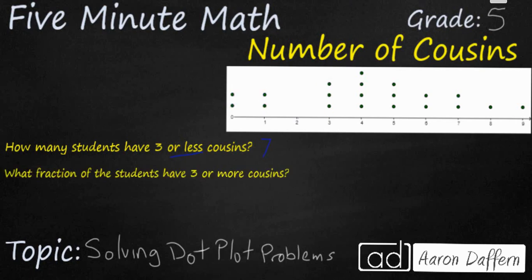Our next problem looks similar but is actually different in two big ways. First it includes the word fraction. So our answer is going to be not necessarily a whole number but a fraction. And in this case we're looking at the fraction of students that have three or more cousins, not three or less. So with our fraction we need to make sure we know the total number of students that responded. That's going to be our denominator. So that is 20.